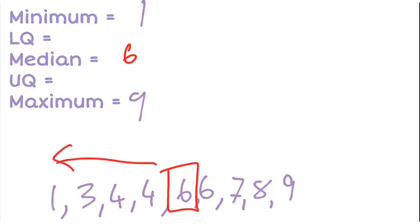So now from those four numbers, 1, 3, 4, and 4, I want to find the median of that group of numbers. So again, pairing them up, and I'll find the median's actually halfway between there. So halfway between 3 and 4 is 3.5.